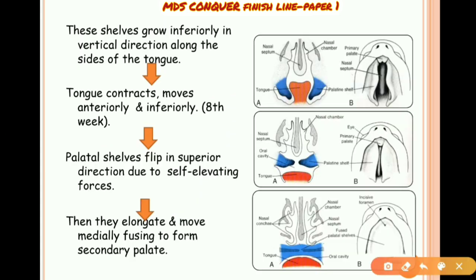The palatal shelves grow inferiorly in the vertical direction along the sides of the tongue. The tongue contracts in the eighth week, then the palatal shelves flip in the superior direction, elongate, and move medially to fuse with each other to form the secondary palate.